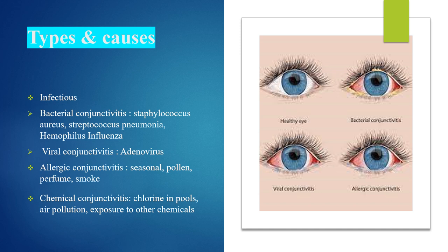Viral conjunctivitis is caused by adenovirus. Allergic conjunctivitis is caused by seasonal allergens such as pollen, perfume, and smoke. Chemical conjunctivitis is caused by exposure to chlorine in pools, air pollution, and exposure to other chemicals. These are the types and causes of conjunctivitis.